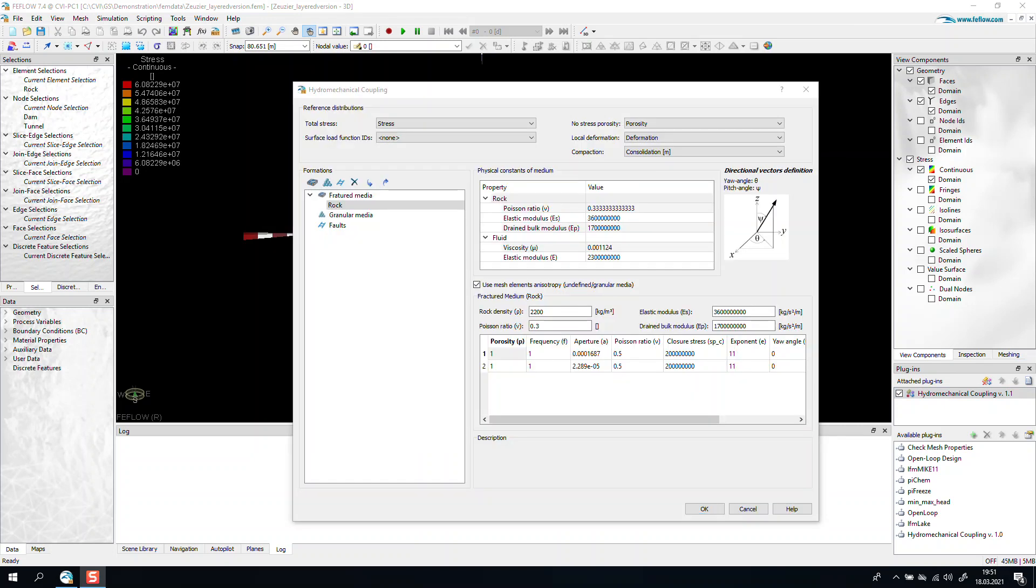In the graphical interface, you are required to connect multiple input values like total stress. This is the name of the distribution that we just created. Surface loads, if you have any, this will be a time series in FEFLOW. No stress porosity, this is not mandatory.